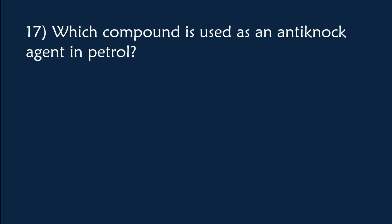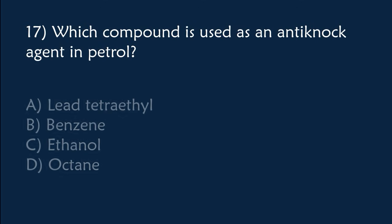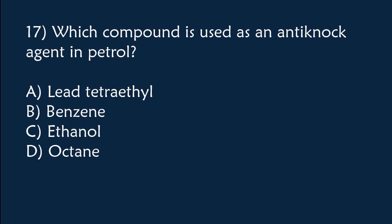Which compound is used as an anti-knock agent in petrol? A) Lead tetraethyl, B) Benzene, C) Ethanol, D) Octane. The correct answer is Option A, lead tetraethyl.